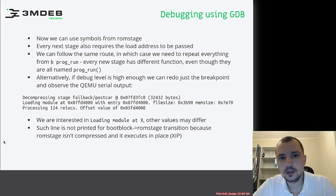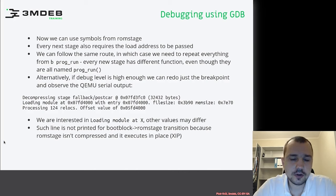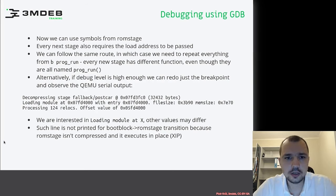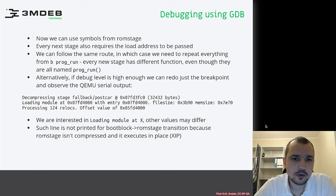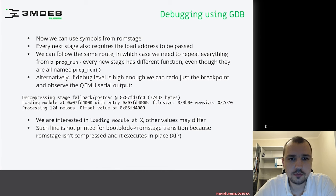We can follow the same procedure until everything boots. Alternatively, if the debug level is very high, we can remove the breakpoint and observe the QEMU serial output — in this case we showed how the postcar output looks on the terminal. We are interested in the lines starting with 'loading module at X', where X is the memory location where the module is loaded. Unfortunately, such a line is not printed for the boot block to ROM stage transition, because ROM stage is not compressed and is executed in place, so that information does not appear in the logs.